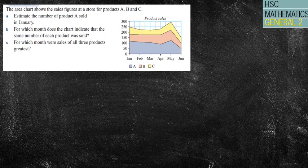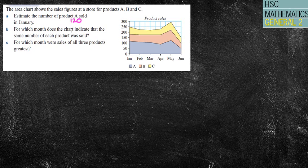Now let's do a question on area charts. The area chart shows the sales figures at a store for products A, B, and C. Estimate the number of product A sold in January. January is here — I'd probably go with about 120, though there's a bit of leeway. For which month does the chart indicate that the same number of each product was sold? Remember, because none of these lines touch, you're looking for the same distance between each colour band.